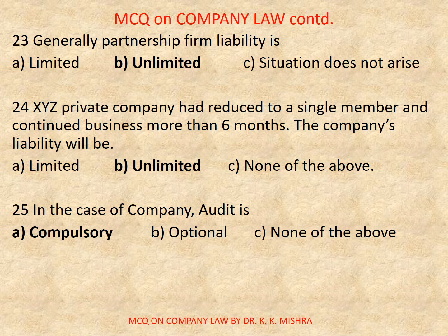Question number 23: Generally, partnership firm liability is — Options are: A) Limited, B) Unlimited, C) Situation does not arise. Correct option is B, Unlimited.